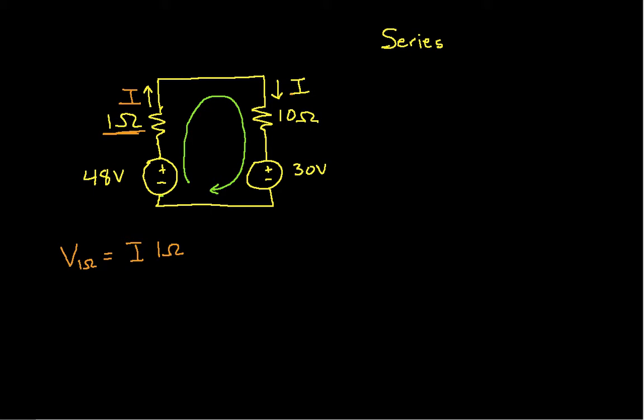So the way we've drawn the current, that says then that this is going to be V sub 1 ohm. The voltage for the 10 ohm resistor for this guy here is going to be V 10 ohm. It will be the current flowing through the resistor, which is I times 10 ohms. So basically this will be V 10 ohms.